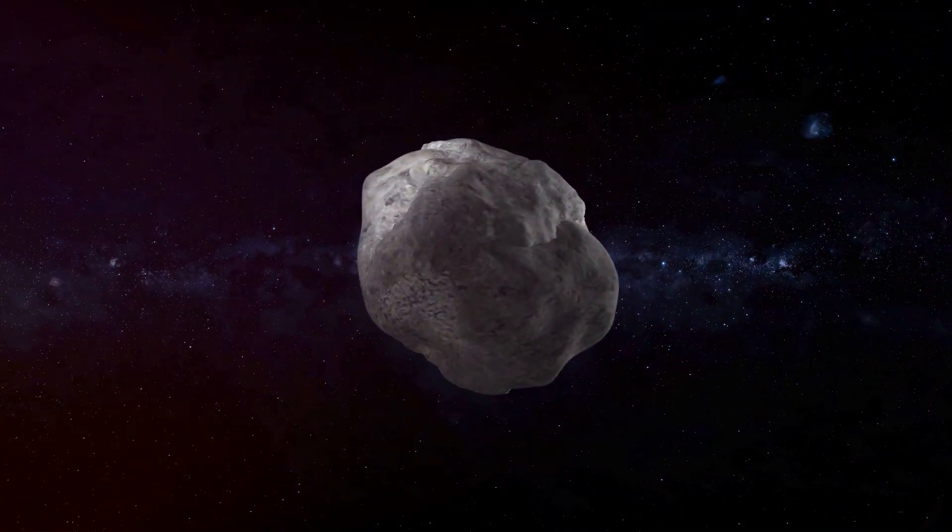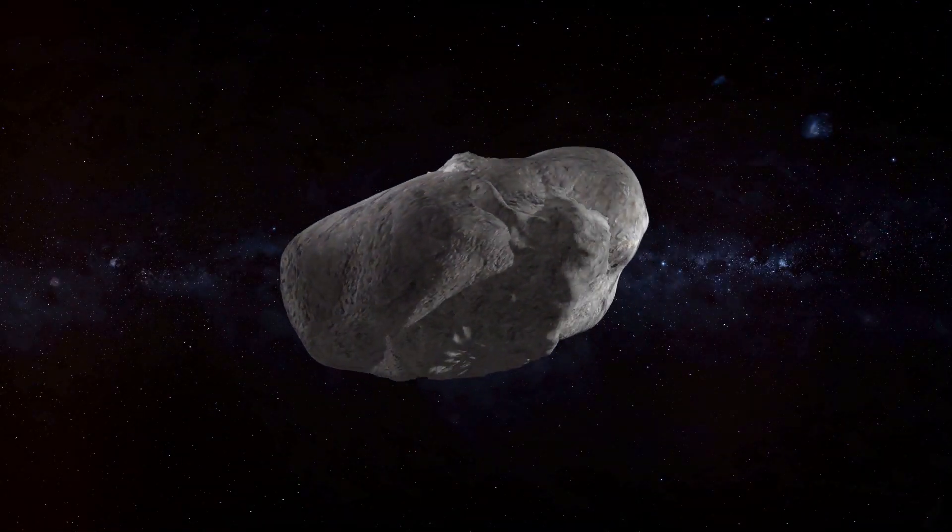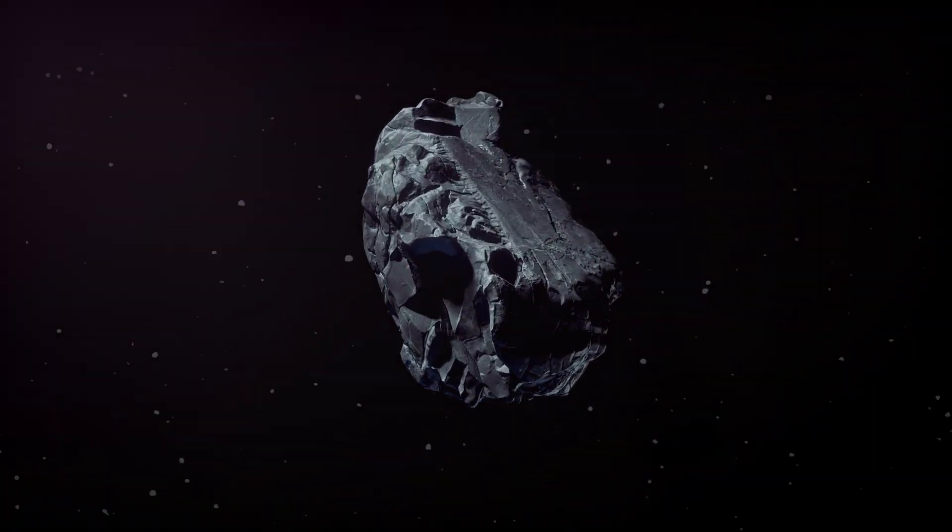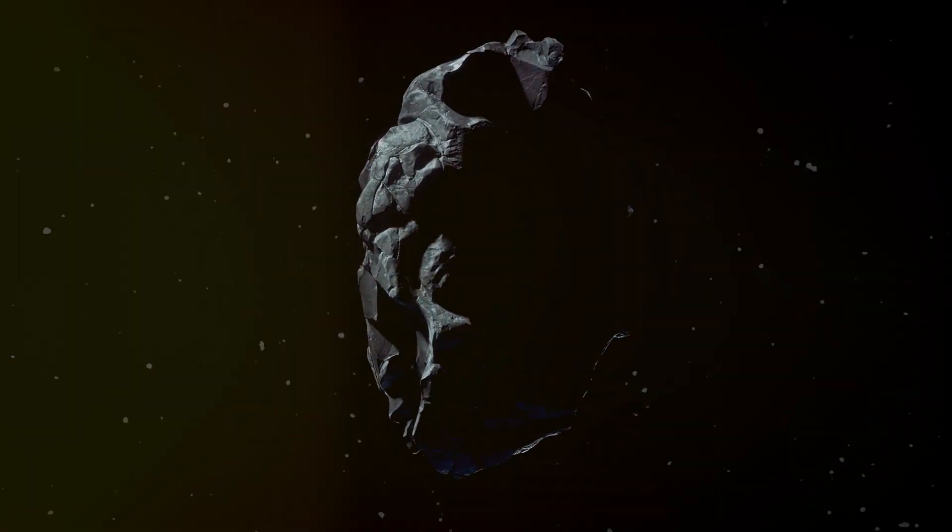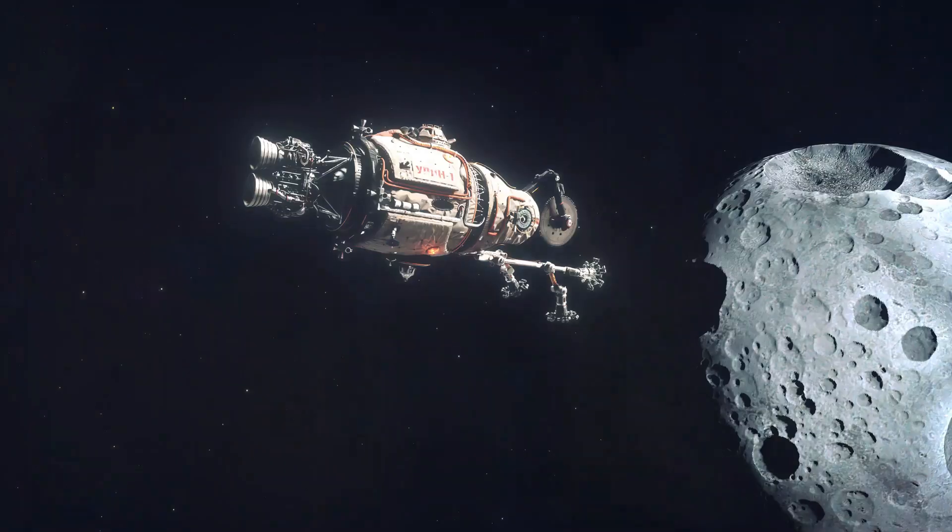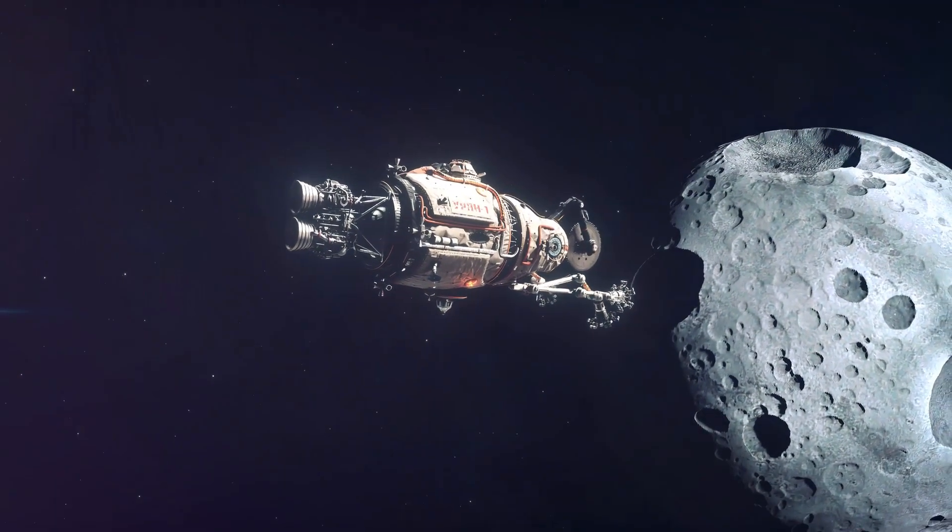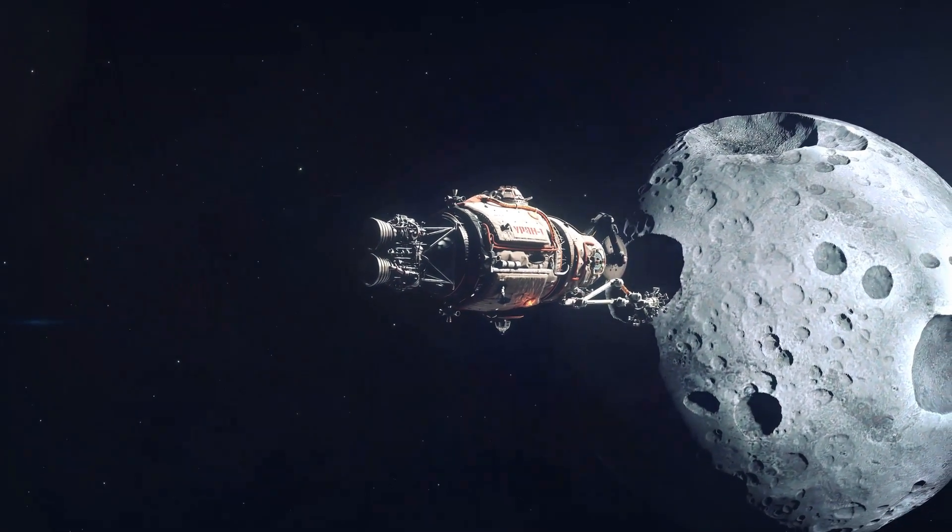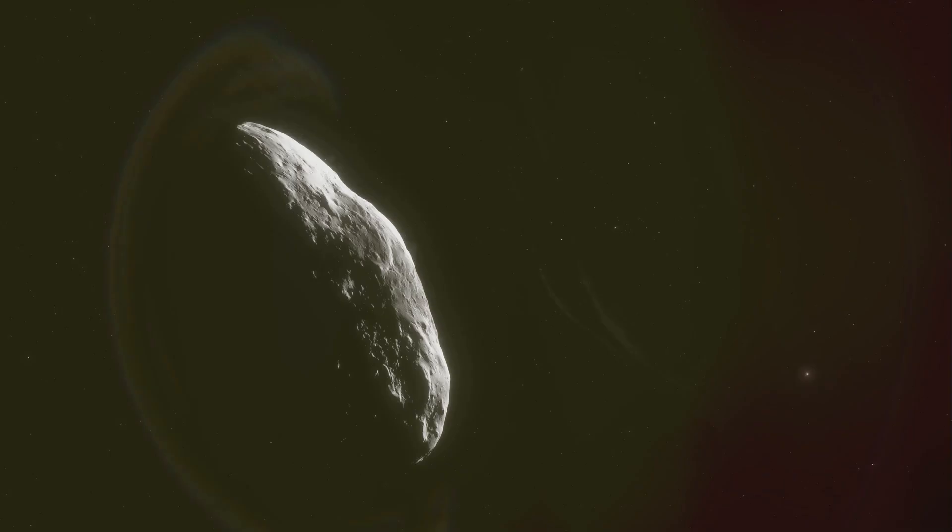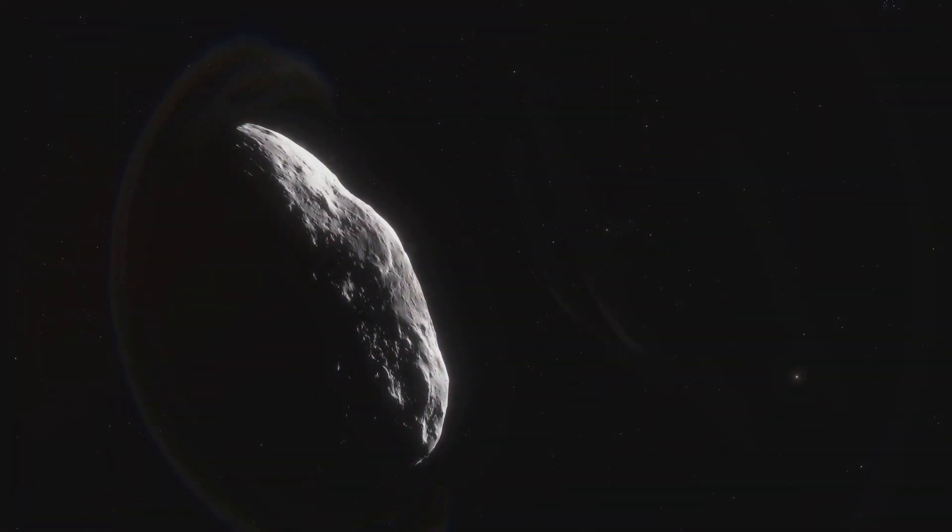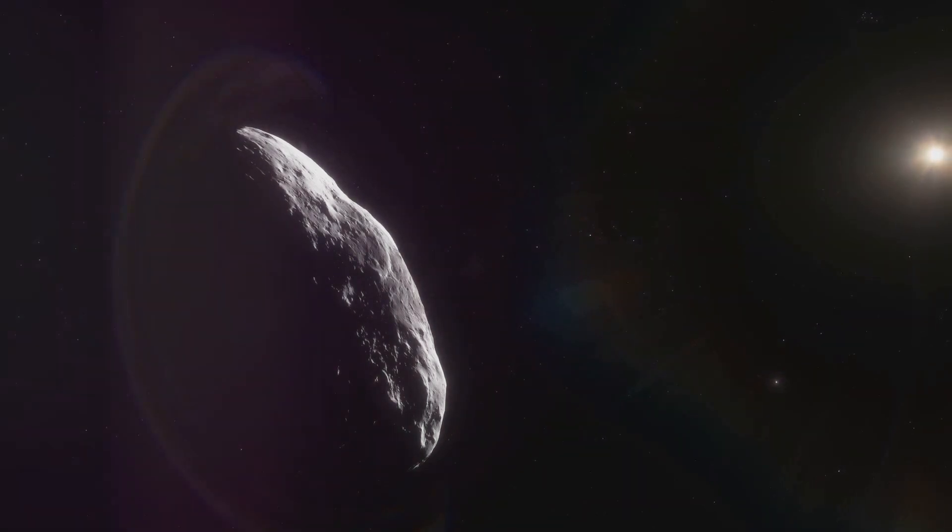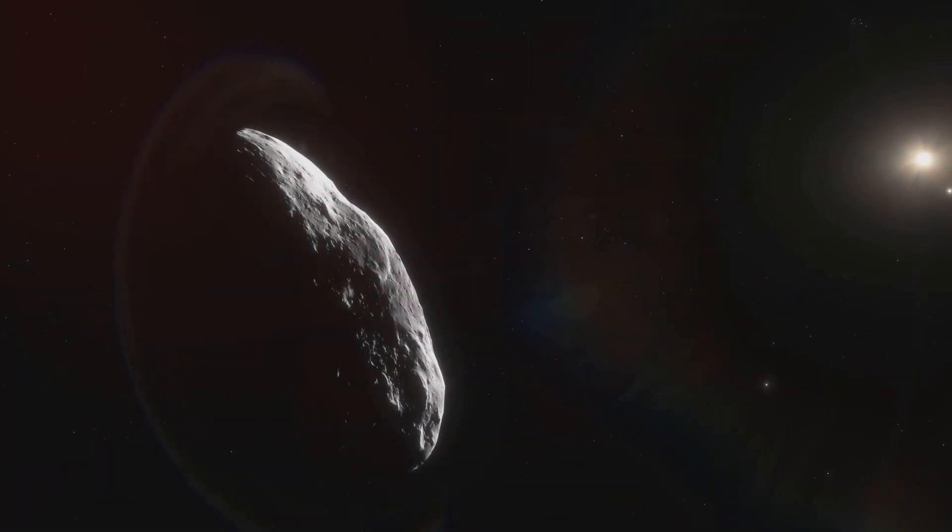Now the first thing to note about Apophis is its size. This is no small space rock. Described as a three and a half football field long beast, it's about 370 meters in diameter. That is larger than the Eiffel Tower. But it's not just the size of Apophis that's concerning, it's also what it's made of. Apophis is a type of asteroid known as an S-Q spectral type. This means it's made up of a mixture of nickel, iron, and other metals. So imagine a massive lump of metal hurtling through space at incredible speeds. That's Apophis.